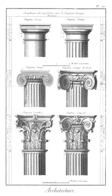Cresting: ornamentation along the ridge of a roof. Cross springer: block from which the diagonal ribs of a vault spring or start; the top of the springer is known as the skewback. Crypt: stone chamber beneath the floor of a church or other building, typically containing coffins, sarcophagi, or religious relics.